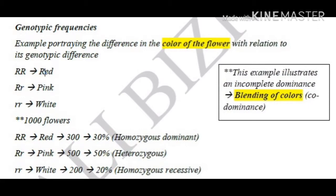Now let's dive into some numbers. We've got a thousand flowers divided as follows: 300 are red, 500 are pink, and 200 are white. They are going to be homozygous dominant, heterozygous, and homozygous recessive, respectively.